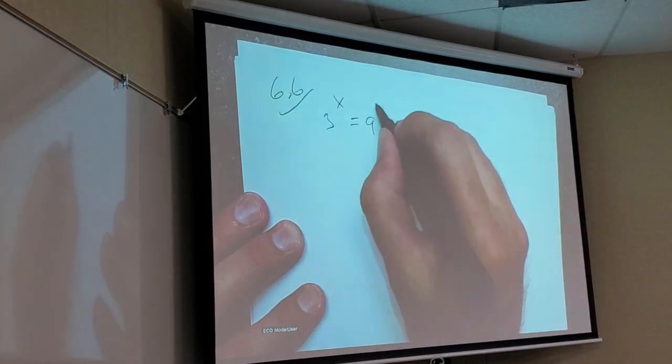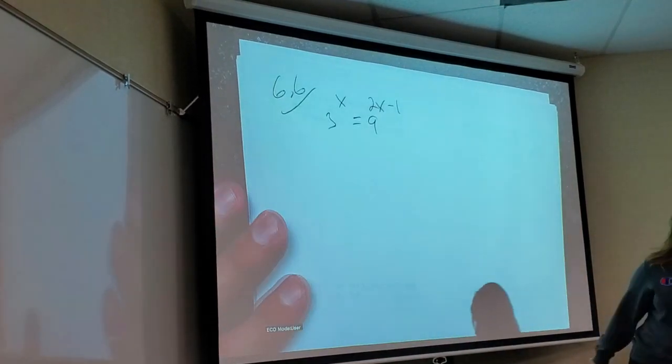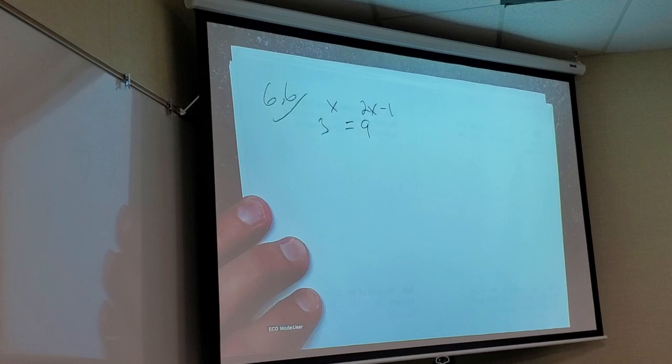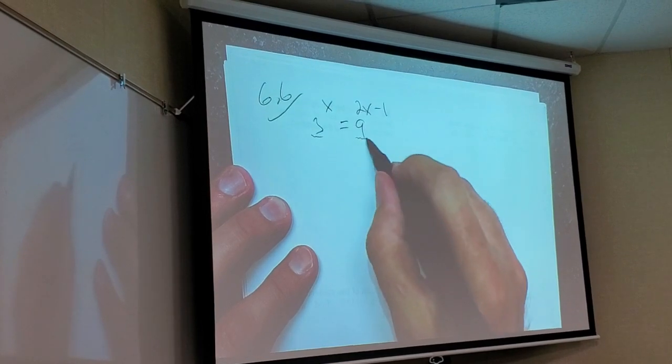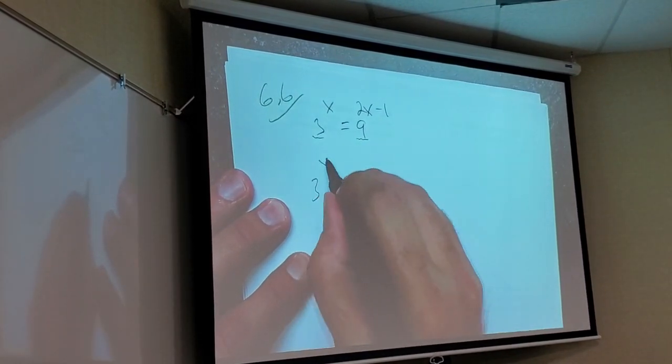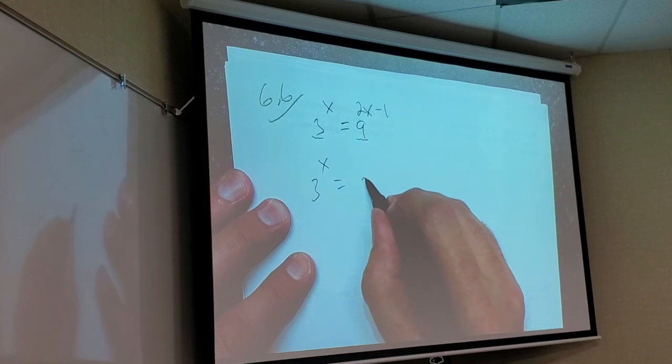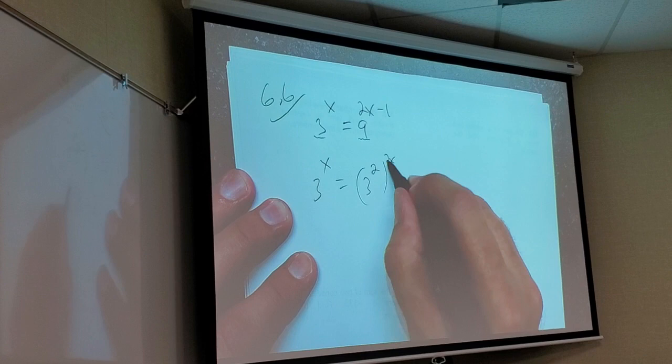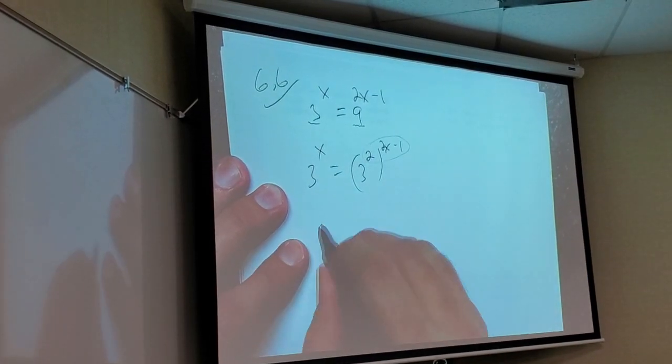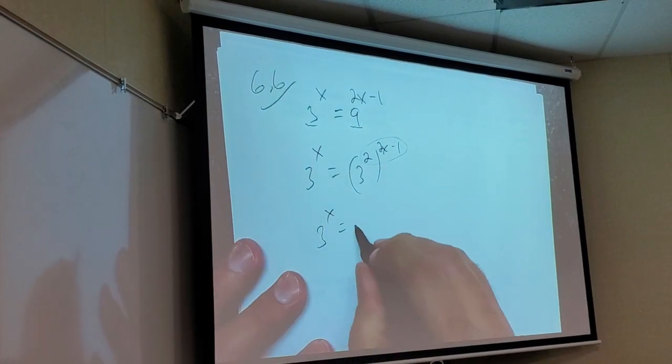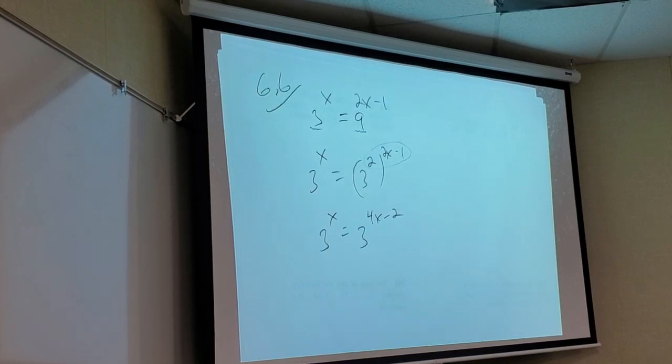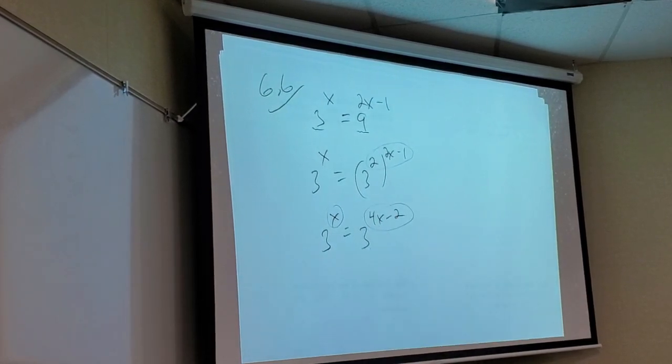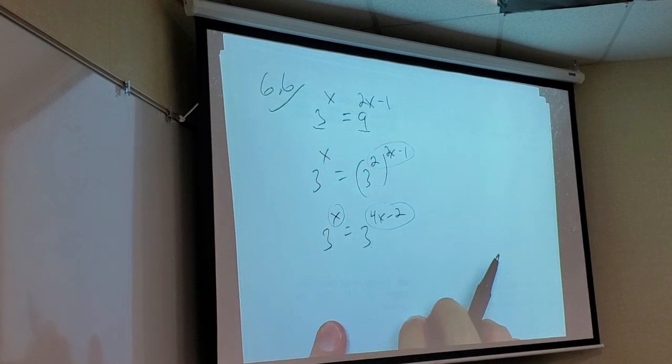So we did problems like, let's see if you guys remember. I did a problem sort of like this: 3 to the x equals 9 to the 2x minus 1. I don't have to use logs for this because what could I do with the bases? Can I make them the same? So this would be 3 to the x and what's nine? Three squared.